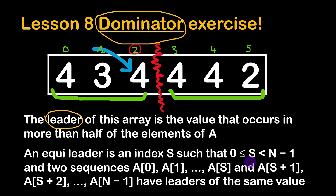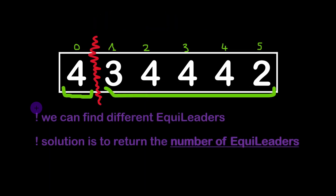As per the definition of the problem, the index position of the split is considered with the left part. So if we say we're splitting at index number two, the element at that index is included in the left part — just an edge case to keep in mind. Moving the splitting position, we can find that another position also yields the same leader on both sides, so index zero is also an equileader.